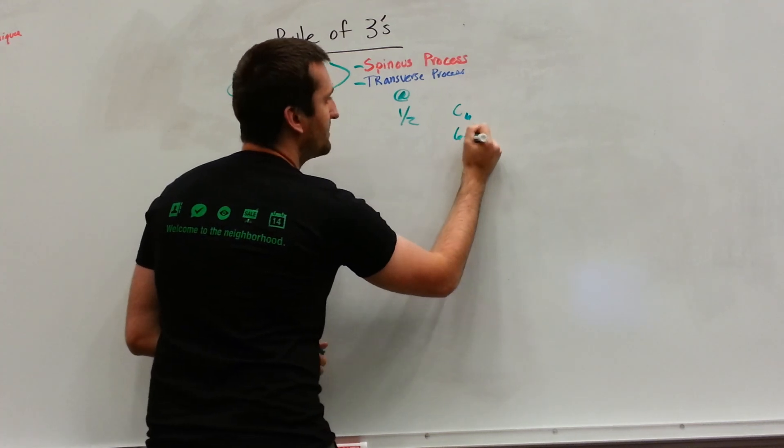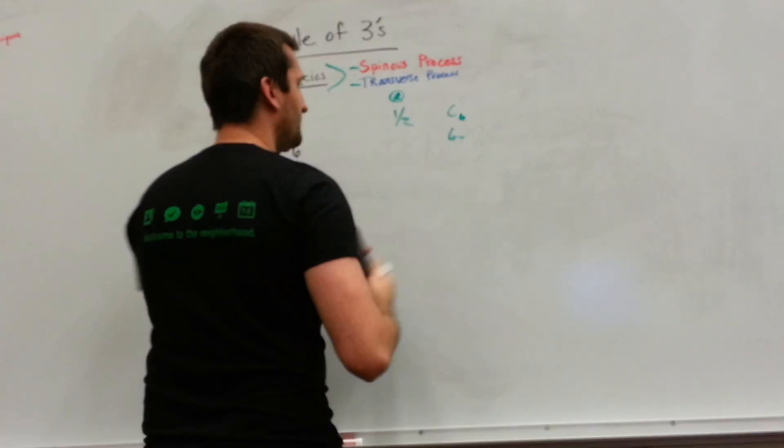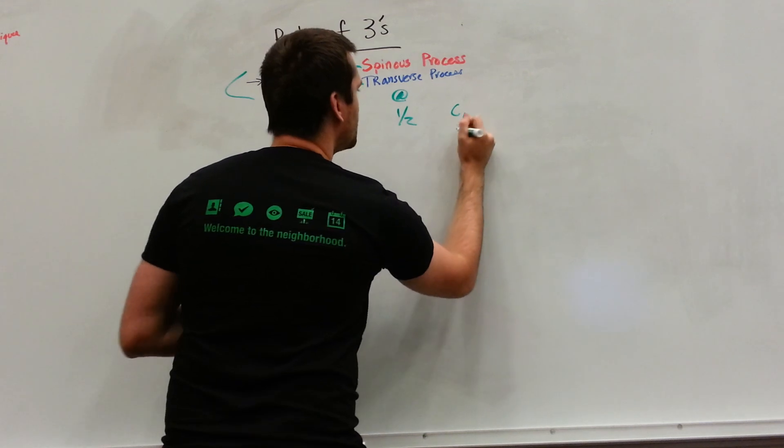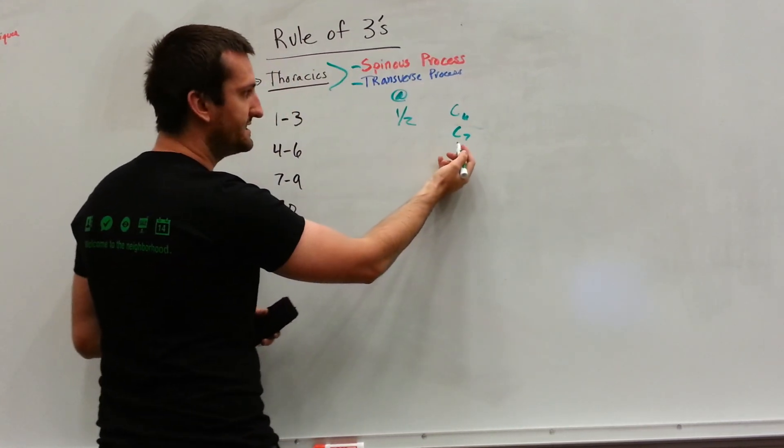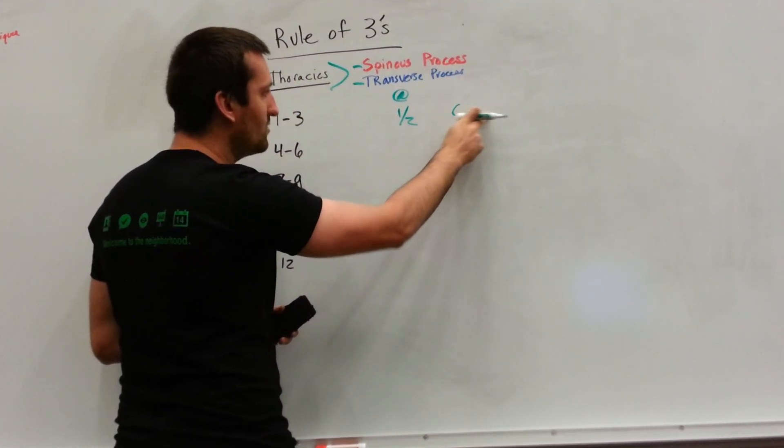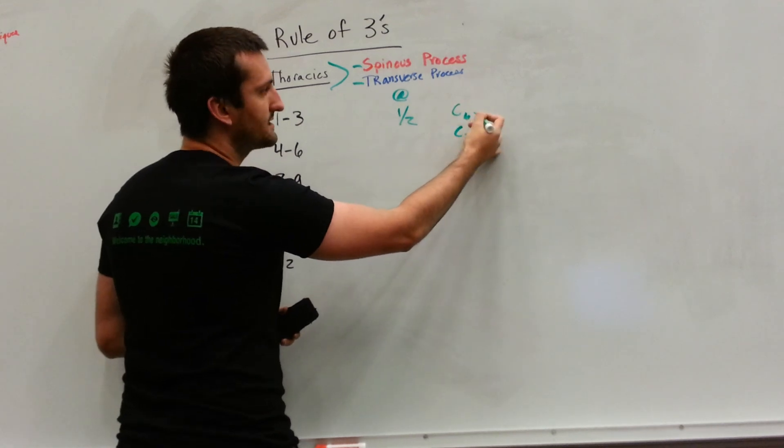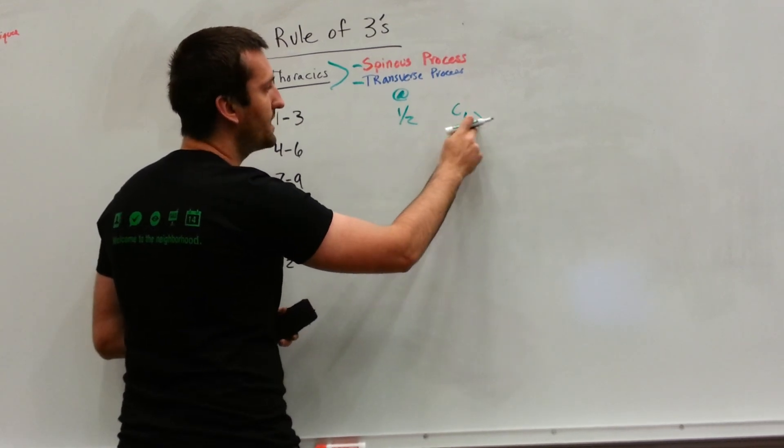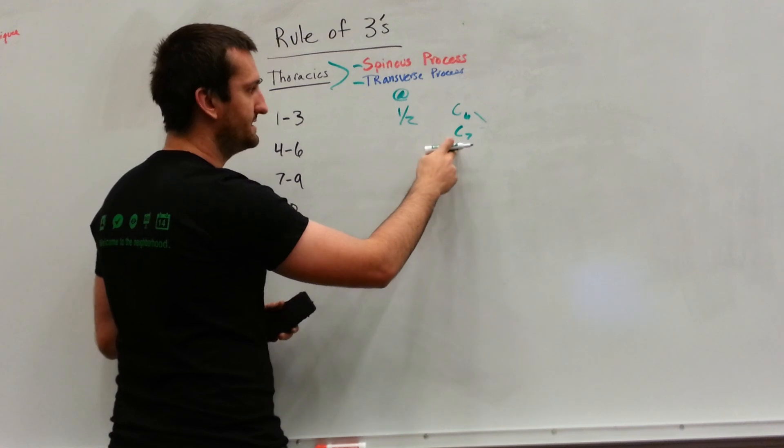it may be between C6 and C7. So instead of sticking straight out the back, it may stick slightly down and it'll be halfway between the level of C6 and C7.